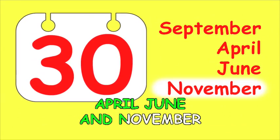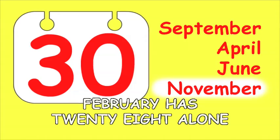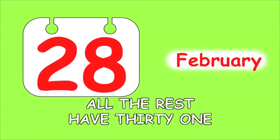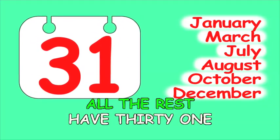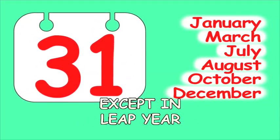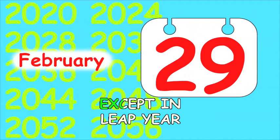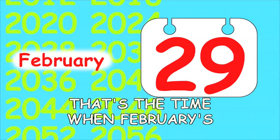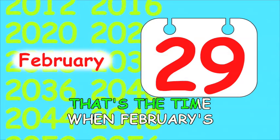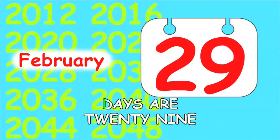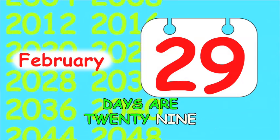30 days hath September, April, June and November. February has 28 alone, all the rest have 31. Except in leap year, that's the time when February's days are 29.